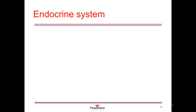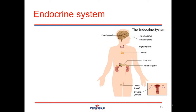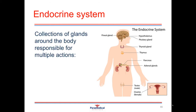The endocrine system is one of the most overlooked or understated systems in the body. A lot of people only think of the endocrine system as being involved with sexual hormones and regulating menstrual cycles and things like that, but they have so much more power over our bodies than we actually realize. The endocrine system is a collection of glands around the body which are responsible for multiple different actions.